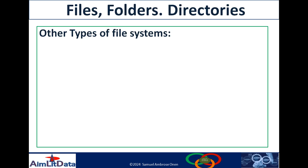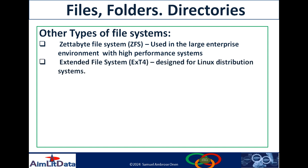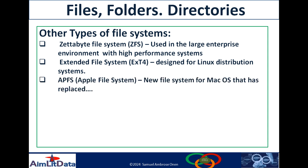There are other types of file systems as well for other operating systems. We have the Zettabyte File System (ZFS), which is used for large enterprise environments with high-performance systems. ZFS is a big one — you find it in data centers, like search engines and other cloud computing systems, using this file system for managing their data. We also have the extended file system, specifically the fourth extended file system (ext4), which is designed for Linux distribution systems.